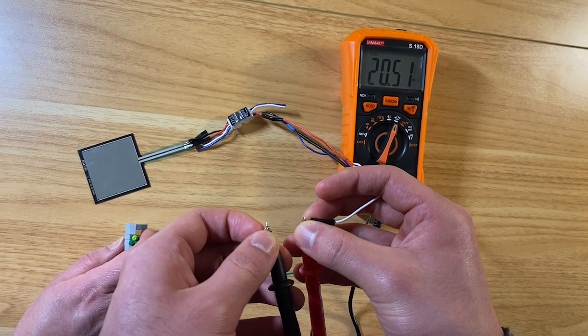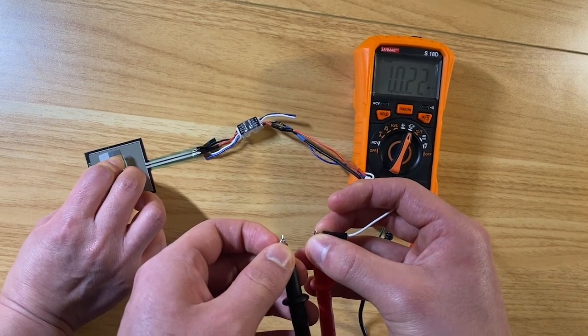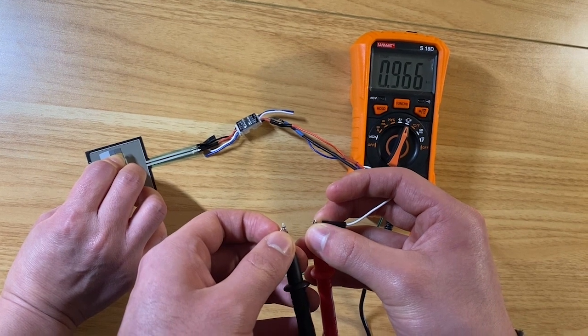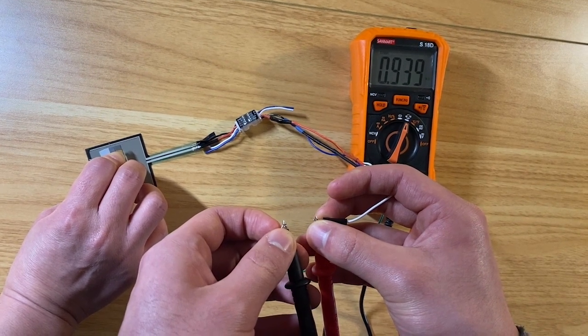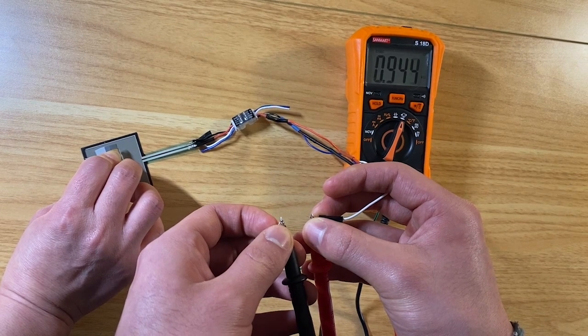You will probably need two people for this next part. One person will hold the two heads of the multimeter with the two heads of the female headers. The other person will press down on the FSR sensor. If the number gets smaller as the pressure increases, you'll know that you have successfully built a FSR circuit.